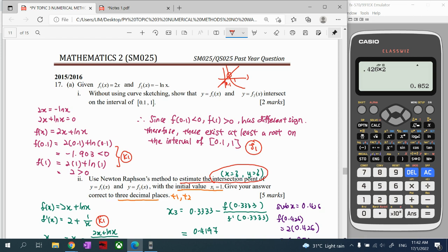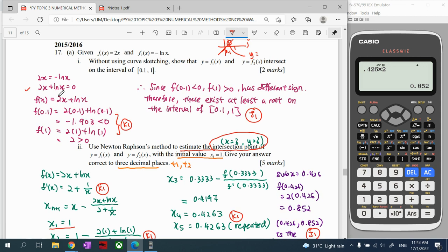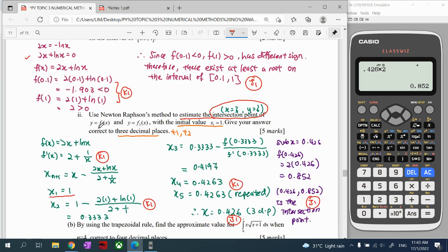Okay, so saya ada dua graph. So bila saya nak cari intersection point, masalah y equation pertama, y equation kedua. Kita substitute, kita dapatlah equation. Become a non-linear equation. Kita nak solve, kita nak selesaikan non-linear equation ini. So bila kita dah dapat teka, kita guna algebraic method, dah dapat teka, dia adalah, dia ada solution di antara 0.1 sampai 1.